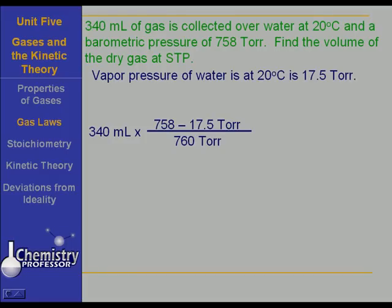Now let's consider temperature. We have this volume of gas collected at 20 degrees Celsius. That's 293 kelvins. And we're going to take it to STP. That's 273 kelvins.